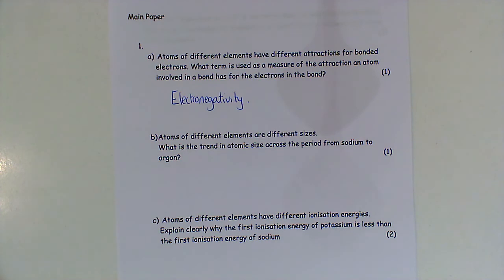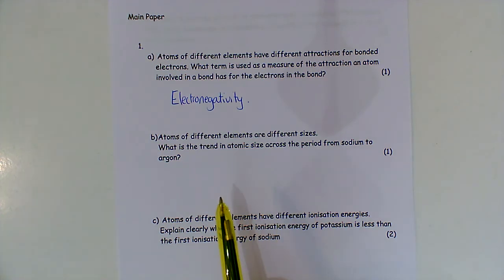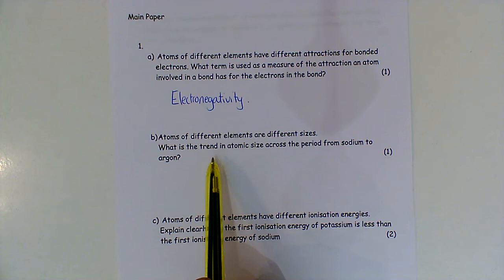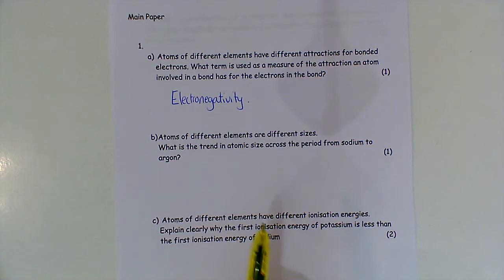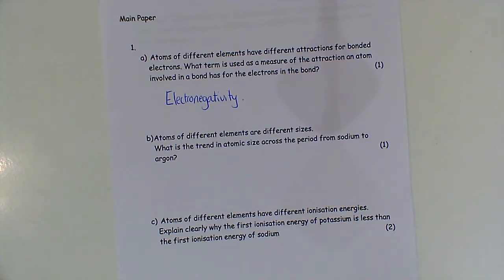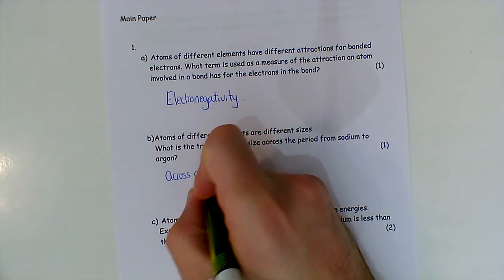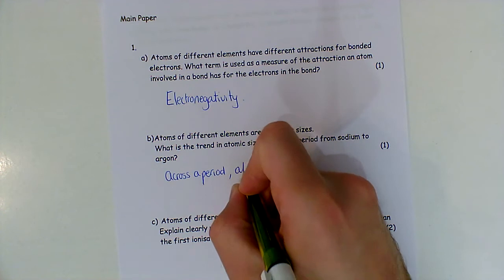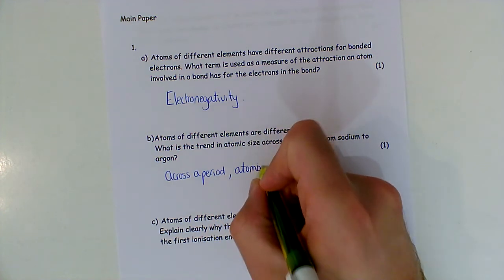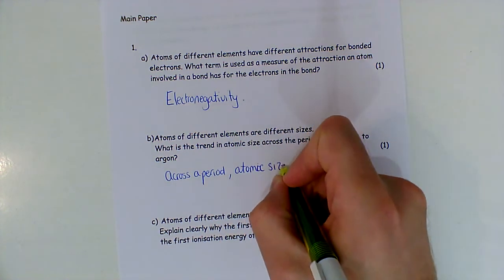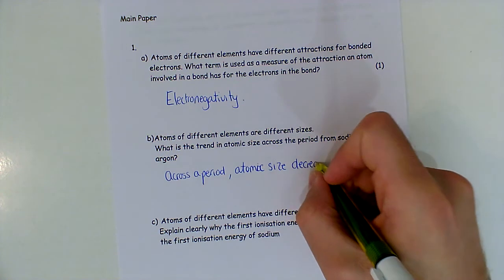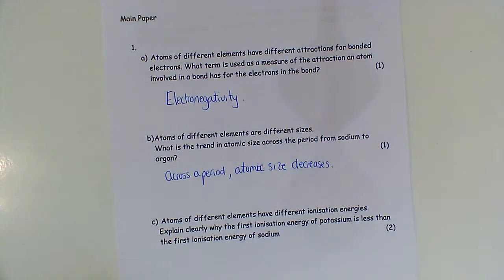Part B: atoms of different elements are different sizes. What is the trend in atomic size across the period from sodium to argon? This just says what is the trend — it doesn't ask you to explain. So the trend is: as you go across a period, atomic size decreases.